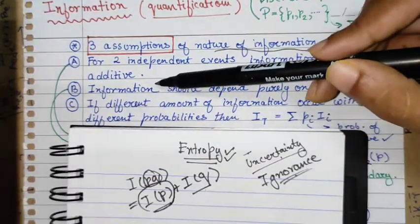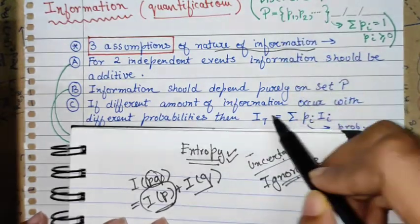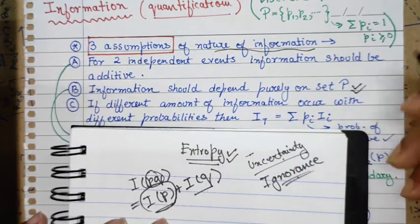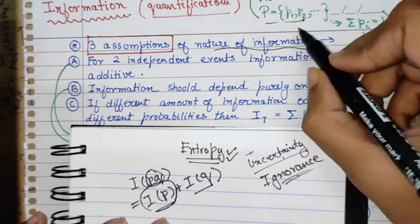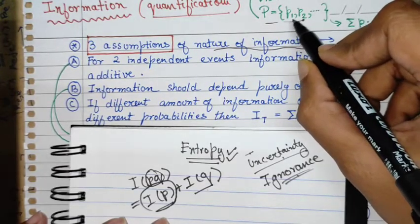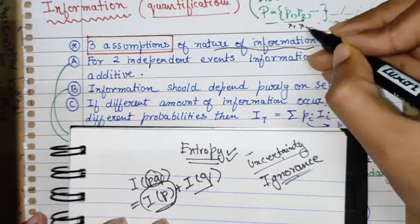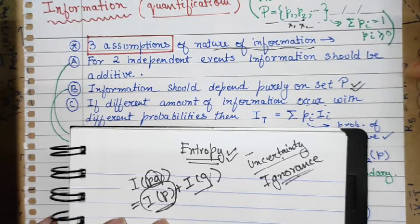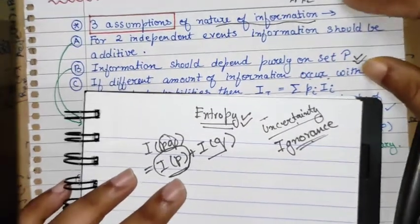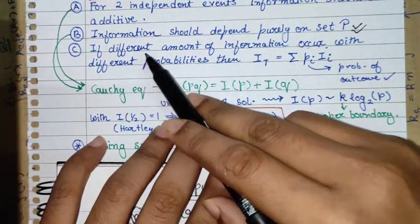The second assumption is that information should depend purely on the set of probabilities. This is very important — information is completely quantified by the probability distribution. For a discrete probability distribution, a random variable X takes outcomes x1, x2, ... with probabilities p1, p2, ... subject to normalization and positive definiteness.